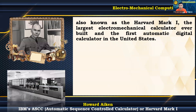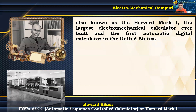Also known as the Harvard Mark 1, it was the largest electromechanical calculator ever built and the first automatic digital calculator in the United States. It was the first digital computer and had a wide range of operations, including multiplication, division, addition, subtraction, logarithms, and trigonometric calculations.